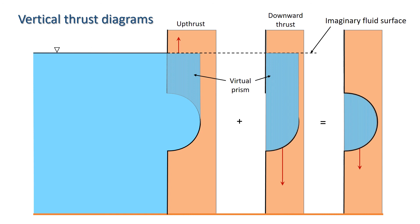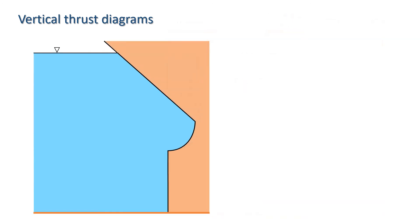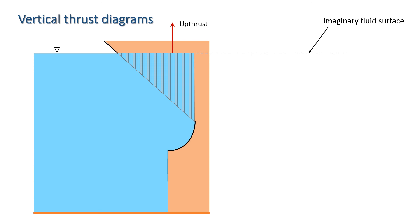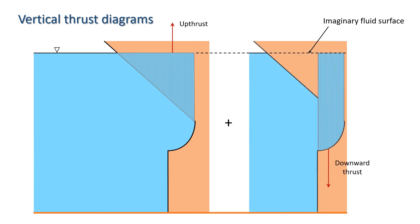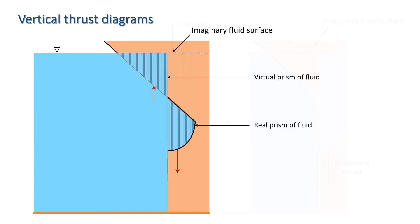We can apply this method of combining vertical thrusts to all sorts of shapes. Here is one last example, with fluid below one part of the surface and fluid above another part. The methodology is the same. We have an up thrust with magnitude equal to the weight of the virtual prism of fluid above the diagonal plane surface, and we have a downward thrust with magnitude equal to the weight of the virtual prism of fluid above the semicircle. The resultant vertical thrust will thus be the sum of the two thrusts shown in this diagram.